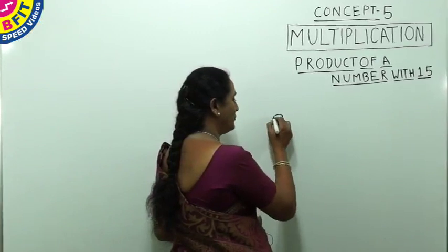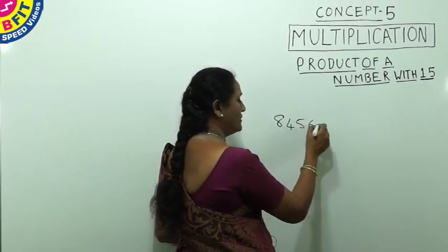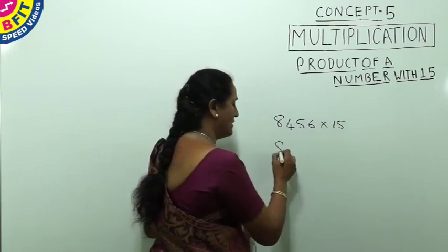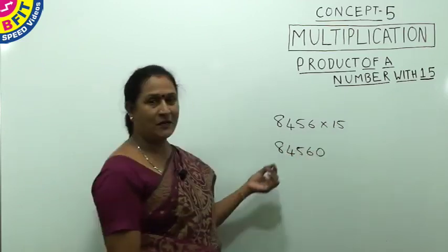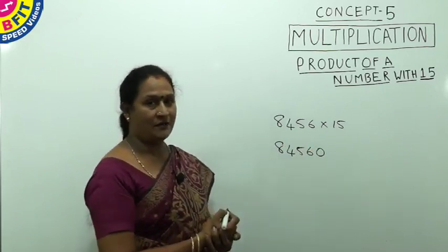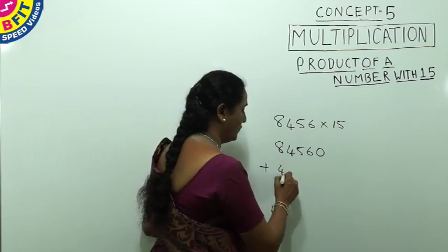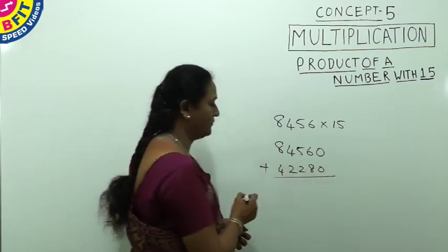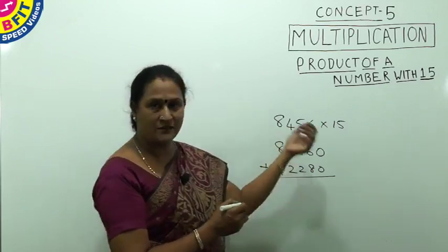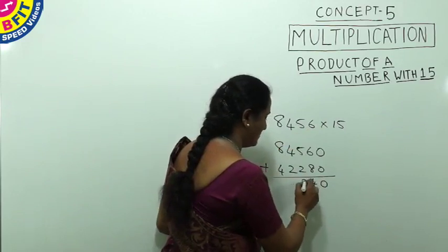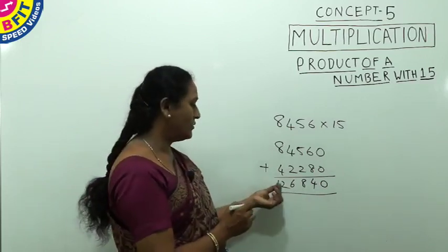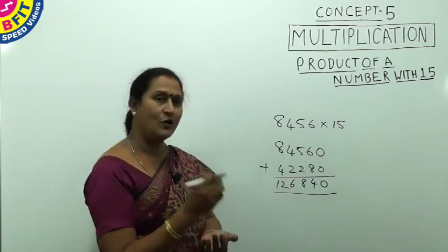For the first question, 8456 × 15: add one zero to get 84560 (multiplying by 10), then add half of 84560, which is 42280. Adding these two values gives the product of 8456 × 15 = 126840. Hope you got the same answer.